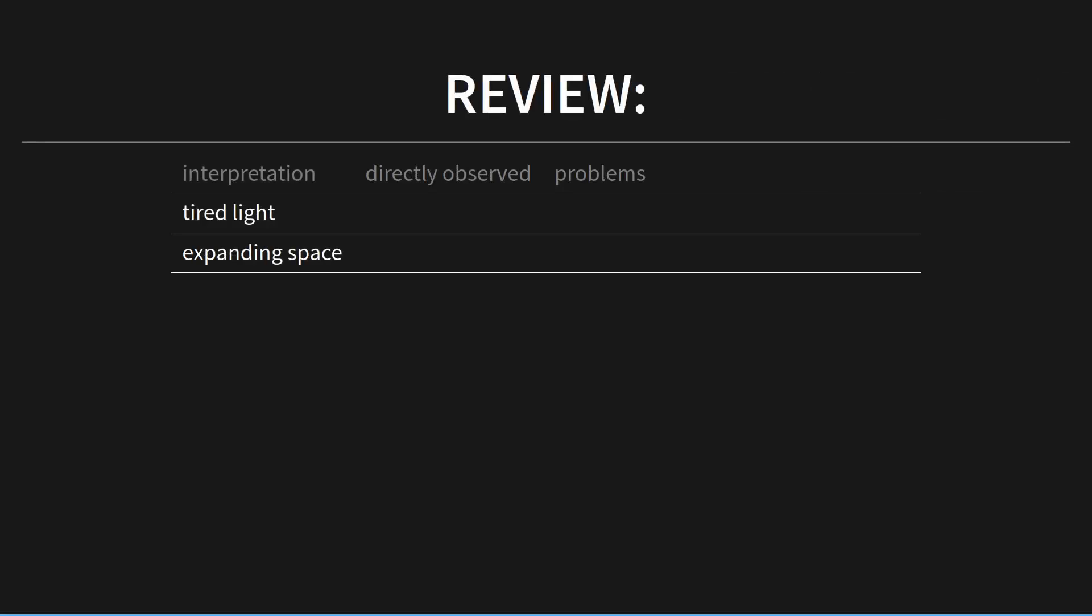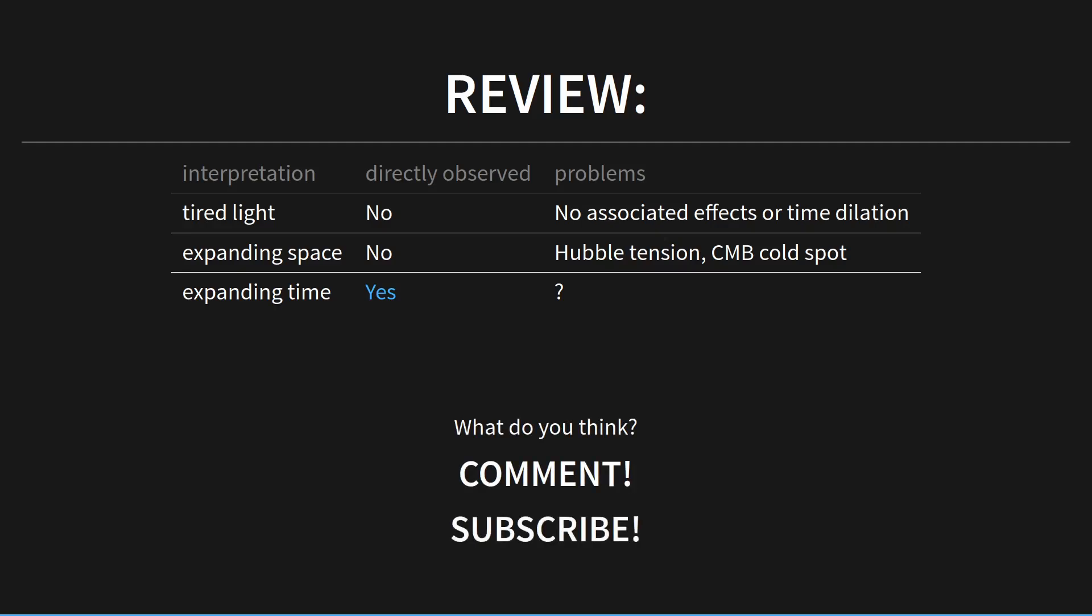So let's review. There's the interpretation of tired light, and that's not directly observed, nor are associated effects with tired light, nor is time dilation possible. The expansion of space is not directly observed either, and we have problems such as the Hubble tension and the CMB cold spot with this interpretation. Expanding time is something we directly observe. So what problems are with it? Well, how about you let me know? Give me a comment. How about a subscribe? Thanks so much for watching.